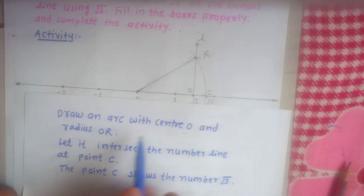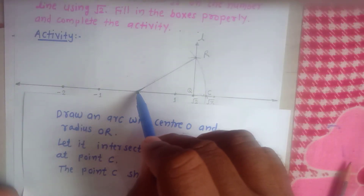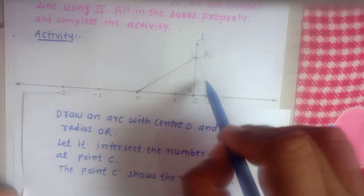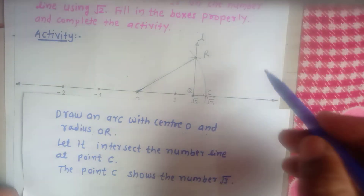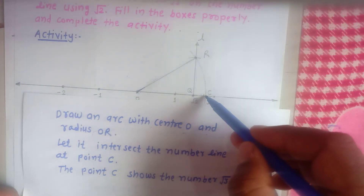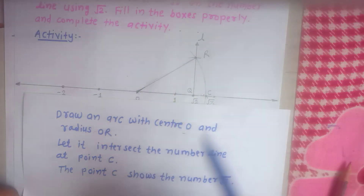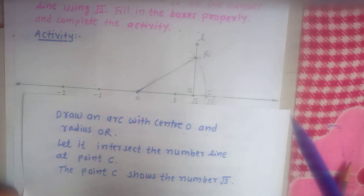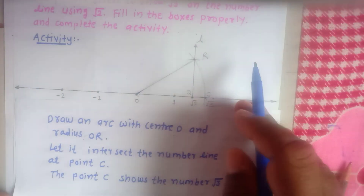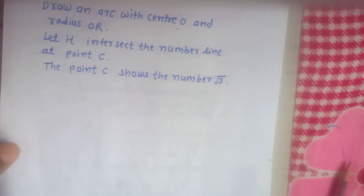Now draw an arc with center O and radius OR. Let it intersect the number line at point C. This arc intersects the number line at point C. Point C shows the number root 3.